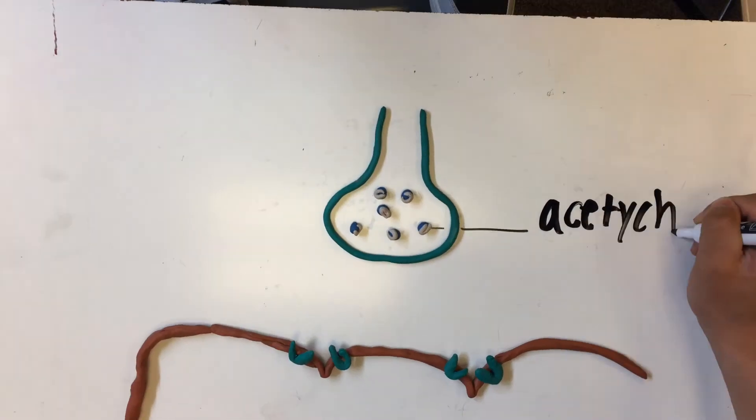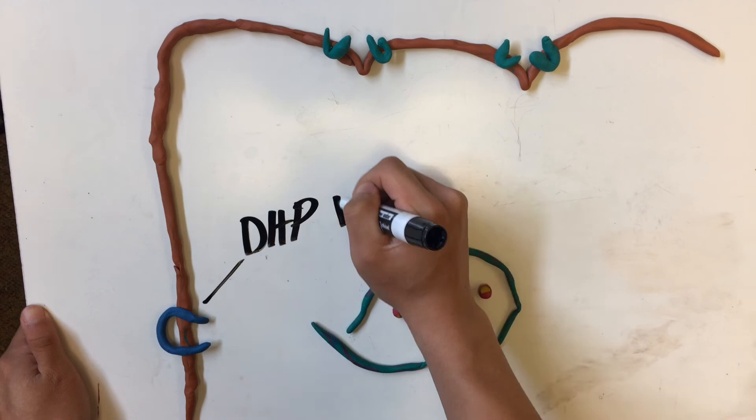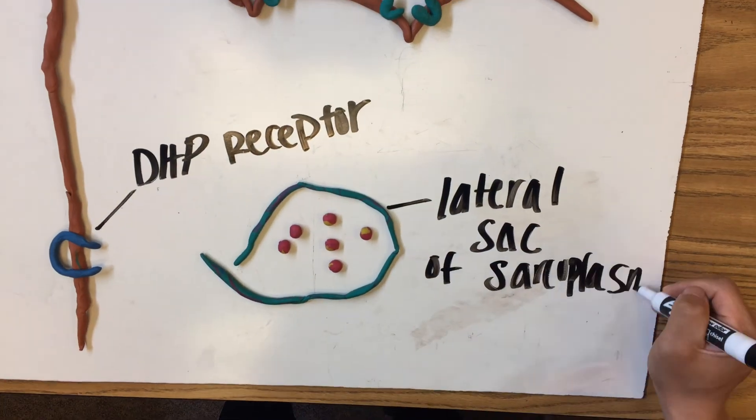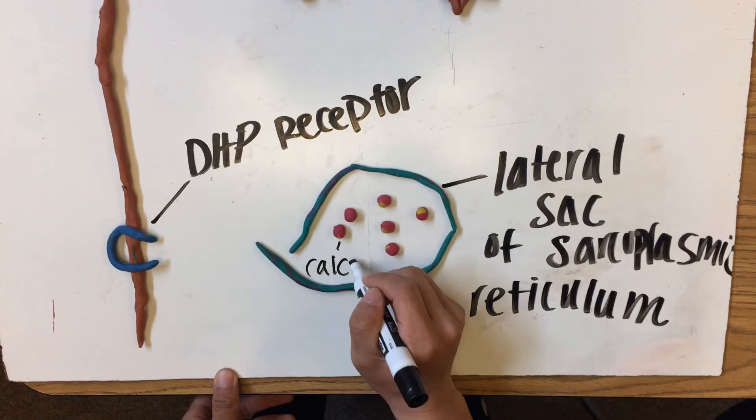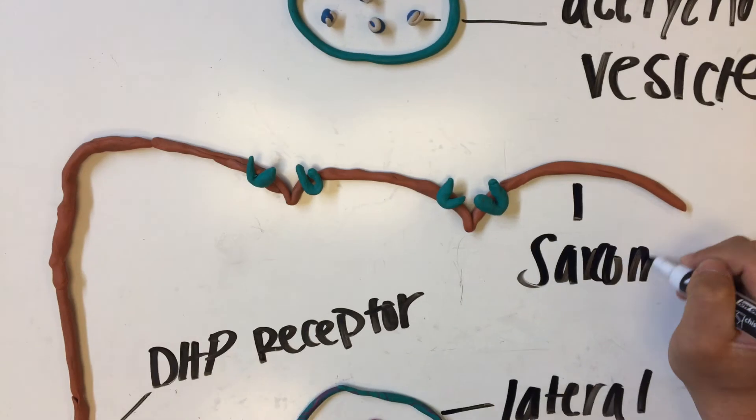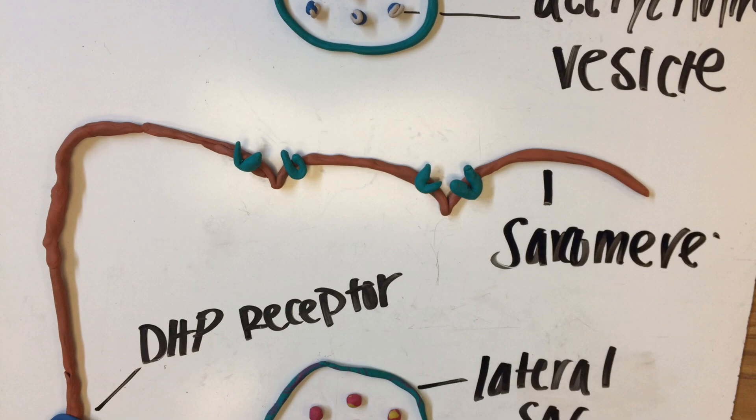Here we have the acetylcholine vesicles. Down here we are going to have the DHP receptor. Over here we are going to have this lateral sac of the sarcoplasmic reticulum and inside we are going to have the calcium. Now over here we are supposed to have the sarcolemma, however it does say sarcomere. I apologize for that mistake.